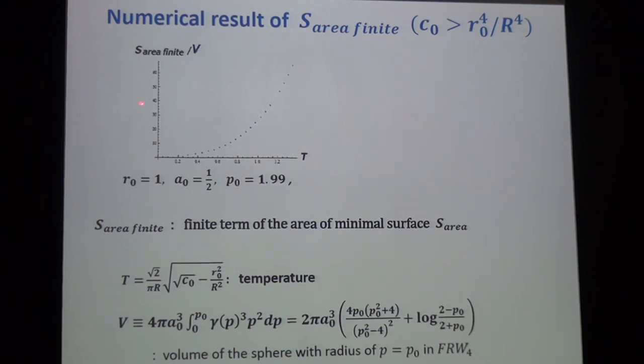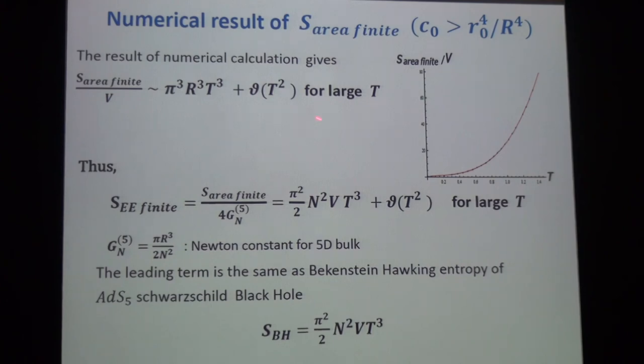I consider the finite term just to subtract the divergent term, and then show the relation between the temperature and the finite term divided by the volume. I obtained these functions numerically, and the coefficient is divided by the cubic. The entanglement entropy is defined by the minimal surface divided by four times Newton's constant. And we get this result, and this is nothing but black hole entropy in the AdS_5 black hole.